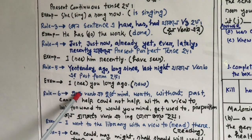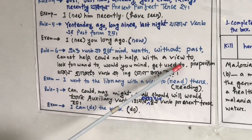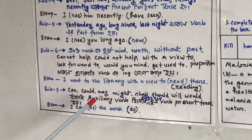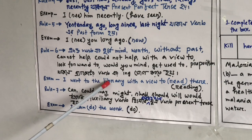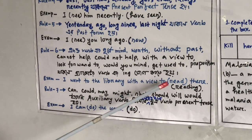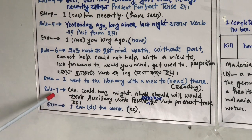Rule 6 — after phrases like 'with a view to,' 'look forward to,' 'would you mind,' 'get used to,' 'cannot help,' and 'could not help,' the verb takes the gerund form (verb + ing). Example: 'I went to the library with a view to reading there.'